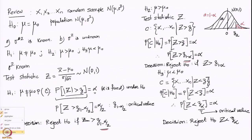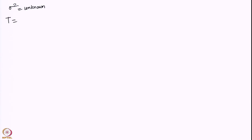When sigma-square is unknown, the Z statistic turns into a T statistic: T equals x-bar minus mu-zero divided by s over square-root of n, where s is the sample standard deviation. This is distributed as t with n minus 1 degrees of freedom.